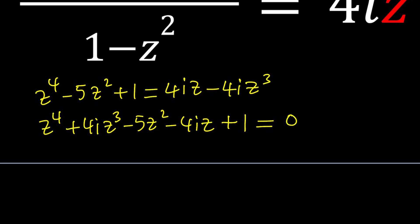Does this look familiar in any way? Look at the coefficients: 1, 4i, negative 5, negative 4i, and 1. There seems to be some type of symmetry, except for the fact that we have 4i and negative 4i, but that could be taken care of. And then we have the negative 5z squared in the middle, which is obviously reflexive. z to the fourth has a coefficient of 1, which agrees with the constant term. So this looks like a good candidate for a perfect quartic.